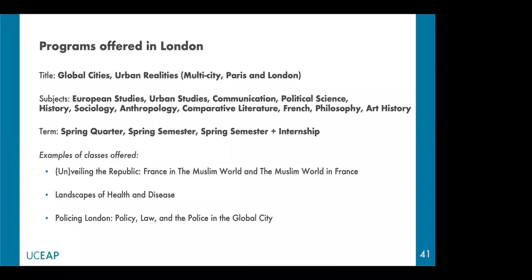The second option is a multi-city program running between Paris and London called Global Cities and Urban Realities. This multidisciplinary program is a good fit for students interested in social sciences and humanities. It is available as a spring quarter and spring semester, and has an internship option for students interested in a working experience abroad. On-site activities include a walking tour of East London for the Landscape of Health and Disease class, a guest lecture with professionals for the Policing London class, and a visit to the first French socially responsible cafe in Paris for the Documenting the Periphery class.